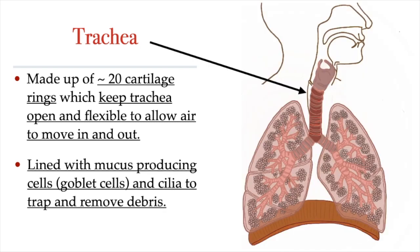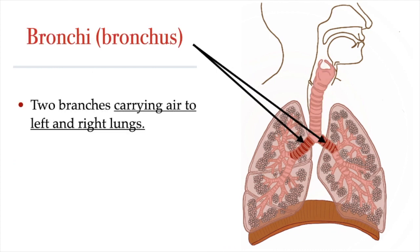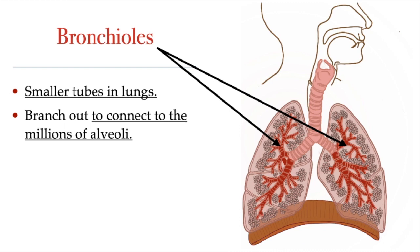At its bottom end, the trachea divides into left and right tubes called bronchi, which connect to the lungs. The bronchi carry air from the trachea into the left and right lungs. They have cartilage and a mucus membrane similar to those found in the trachea. In the lungs, the bronchi subdivide into progressively smaller airways called bronchioles, which deliver oxygen-rich air into the millions of alveoli.